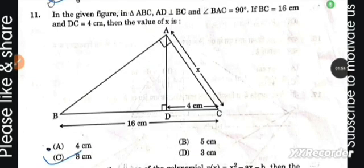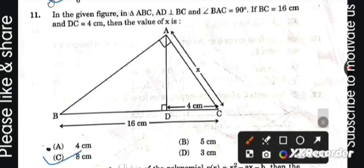Question number 11: In the given figure, in triangle ABC, AD is perpendicular to BC and angle BAC is 90 degrees. If BC is equal to 16 centimeters and DC is 4 centimeters, then the value of x is 8 centimeters.